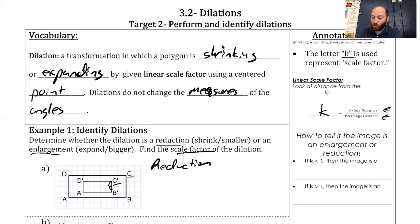C prime to B prime is two. C to B is four. So my K is going to be prime, which is two, over four, the original pre-image. Let's reduce that: one half. My scale factor here is one half.